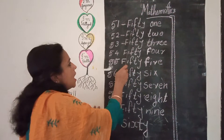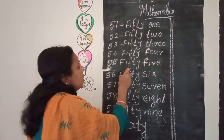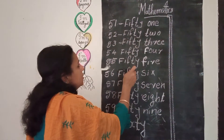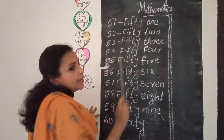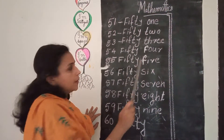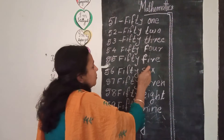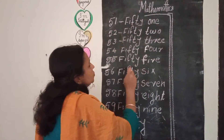52 — spelling: F, I, F, T, Y, T, W, O. Fifty-two.